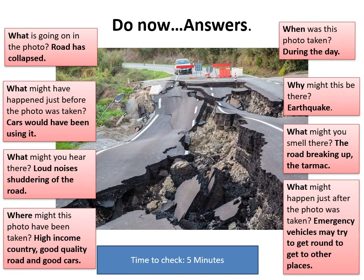Okay, so here are some of my answers. You may very well have come up with slightly different perspectives, which is fine. What is going on in the photo? Well, the basics is that the road has collapsed. That road has collapsed down. You can see there's a vehicle in the background that has stopped and the road has been closed.